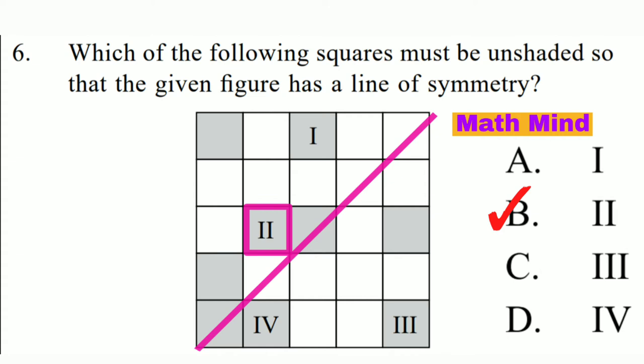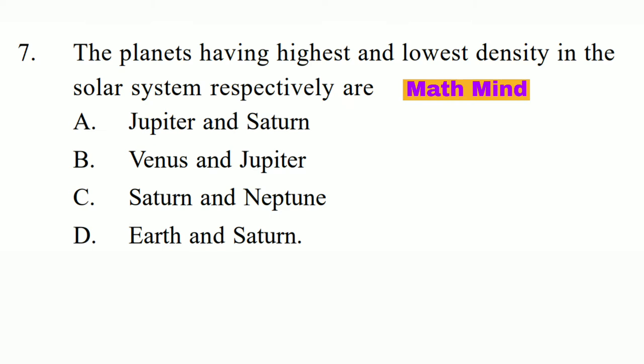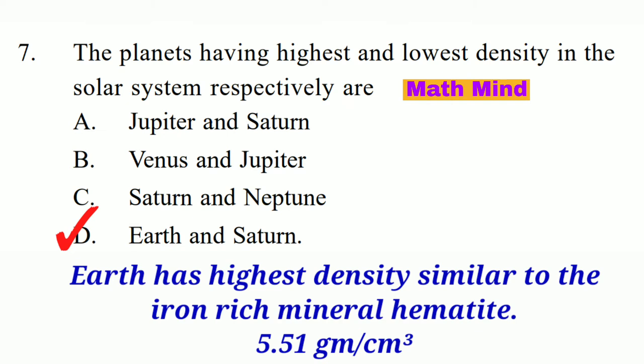Question No. 7. The planets having the highest and lowest density in the solar system respectively are blank. Option D is correct: Earth and Saturn. Earth has the highest density, similar to the iron-rich mineral hematite, at 5.51 grams per cubic centimeter. Saturn has the lowest density, lower than that of water.